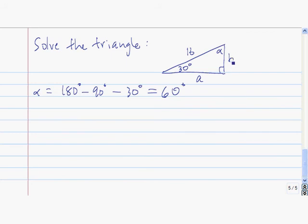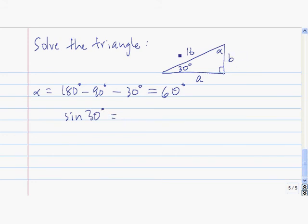Now the question is which trig function to use. The easiest to use are sine, cosine, and tangent. I don't want to use tangent because that requires the opposite and the adjacent, giving two unknowns. I don't want to use cosine because that involves side a, not b. Since b is opposite to 30 degrees and I know the length of the hypotenuse, I'll use the sine function. So sine of 30 degrees equals b over 16. Multiplying both sides by 16, b equals 16 times the sine of 30 degrees.